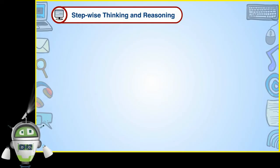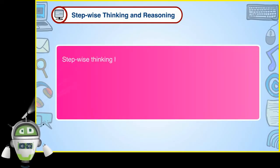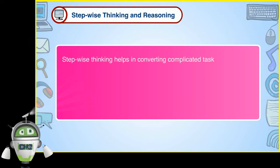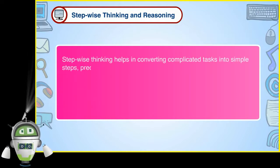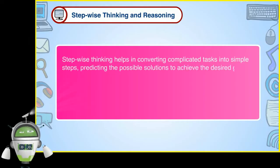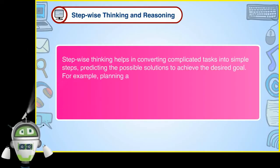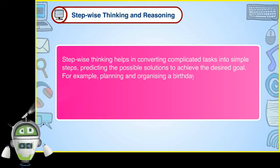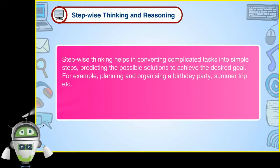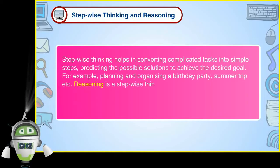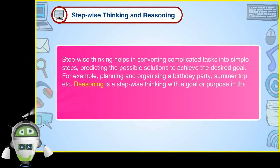Stepwise Thinking helps in converting complicated tasks into simple steps, predicting the possible solutions to achieve the desired goal. For example, planning and organizing a birthday party, summer trip, etc. Reasoning is a stepwise thinking with a goal or purpose in the mind.